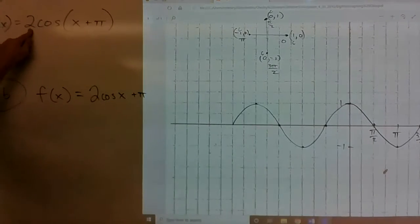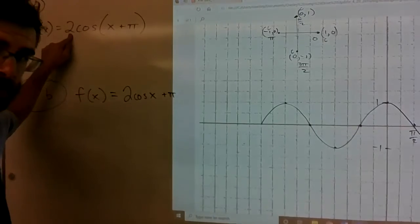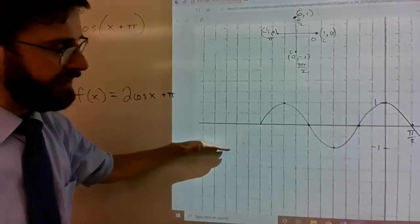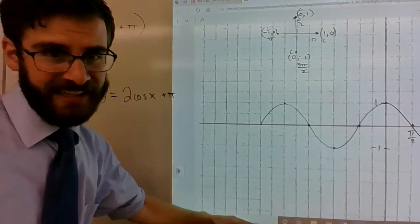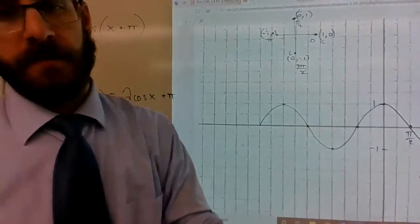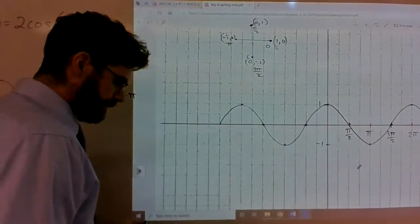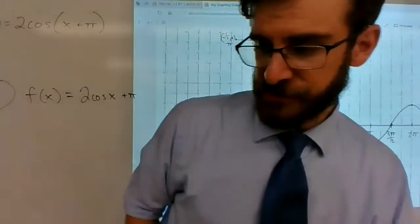This means I've got a new amplitude of 2, which means the distance between 0 and its peak is going to be 2. The difference between 0 and its valley is also going to be 2. So cosine, I'll do it in green marker, this first one.